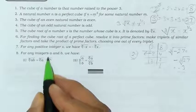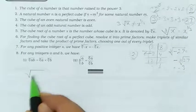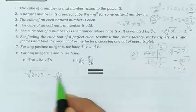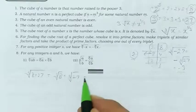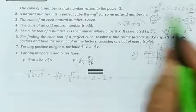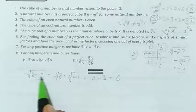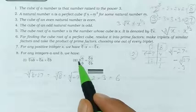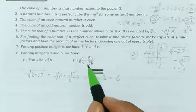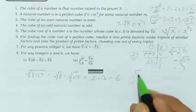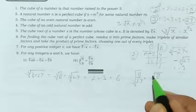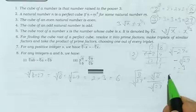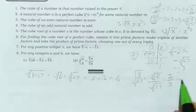For any integers a and b, cube root of a×b equals cube root of a multiplied by cube root of b. Like, cube root of 8×27: cube root of 8 is 2, cube root of 27 is 3, so 2×3 = 6. Also, cube root of a/b equals cube root of a divided by cube root of b. So cube root of 8/27 is cube root of 8 divided by cube root of 27, which is 2/3.